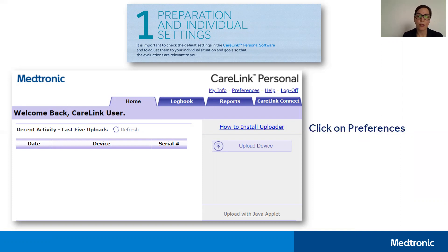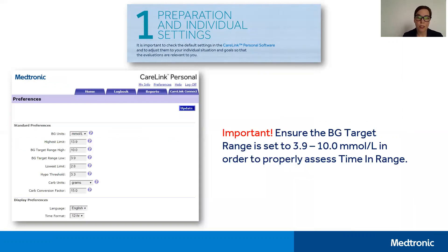Next, you'll want to click on Preferences in order to customize your CareLink reports. It is important to check the default settings in CareLink Personal software and adjust them to your individual situation and goals so that the evaluations are always relevant to you. A good example of when you might want to do this is if you're working shift work, where perhaps night shift means that your overnight period would not be typical — in that case, you'd want to adjust it to your own personalized settings.